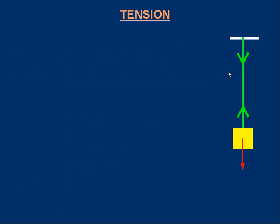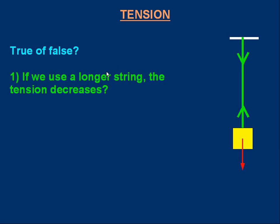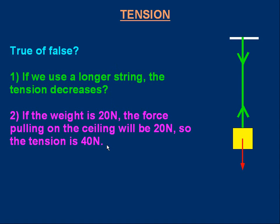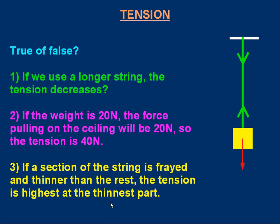Let's ask you a couple more questions. Here's our setup: ceiling, string in tension with an object hanging at the bottom. Here are some true or false statements. Number one: if we use a longer string, the tension decreases. Number two: if the weight is 20 newtons, the force pulling on the ceiling will be 20 newtons, so the tension is 20 plus 20 — 40 newtons. And number three: if a section of the string is frayed and thinner than the rest, maybe the middle of the string is thinner, the tension will be highest at the thinnest part. Are those statements true or false? Pause and think about them.